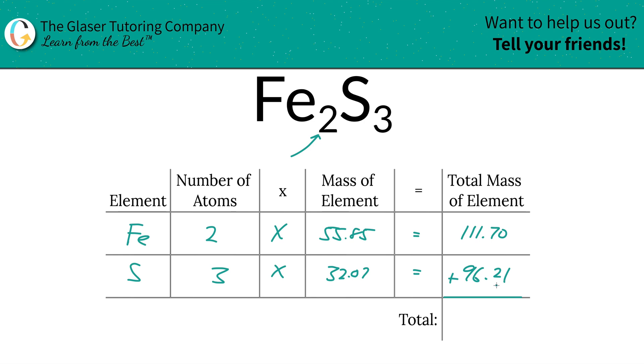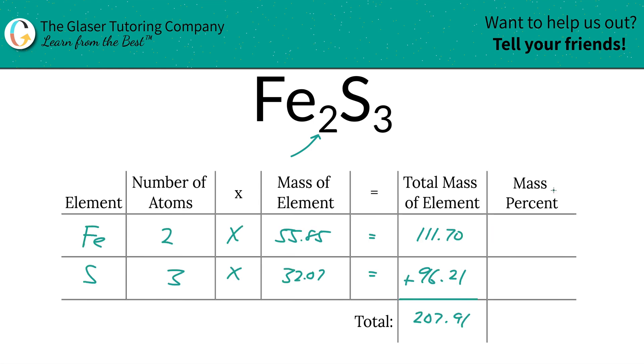So then to find the total mass of the entire compound, which is what we're interested in here, it's going to be 207.91. And there you have it. There's the first step of that particular process to finding the percent compositions. We have to find the total mass. Now all I'm going to do is add a column to the table and then calculate the percentages. Easy peasy.